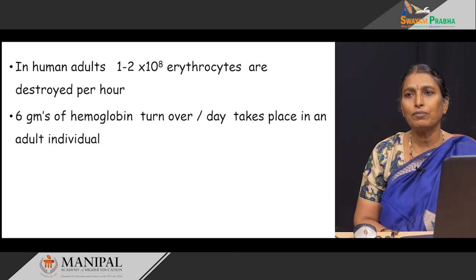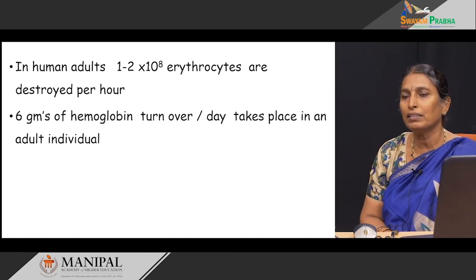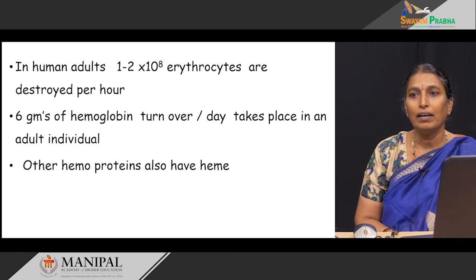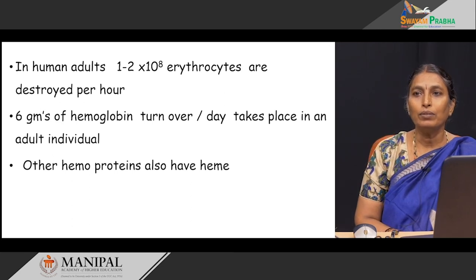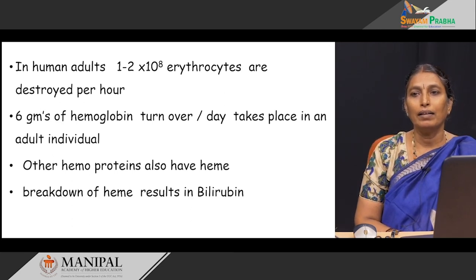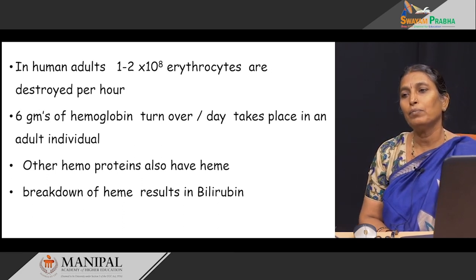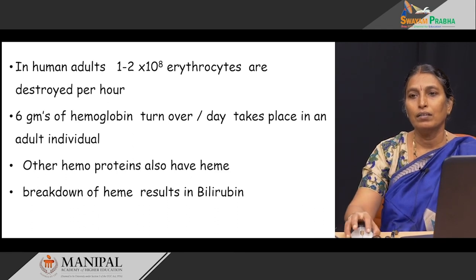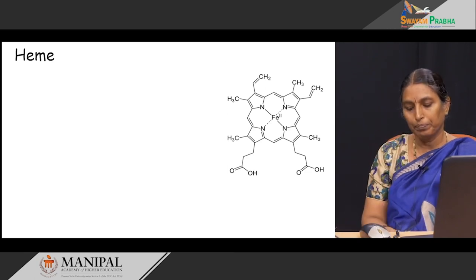Approximately 6 grams of hemoglobin turnover per day takes place in an adult individual. Other hemoproteins also have heme similar to hemoglobin, and breakdown of this heme results in the formation of bilirubin. Ultimately, bilirubin is formed from heme.